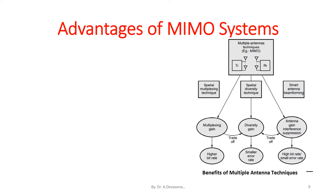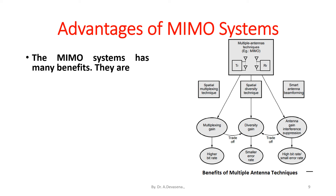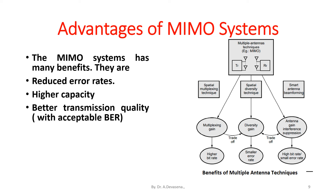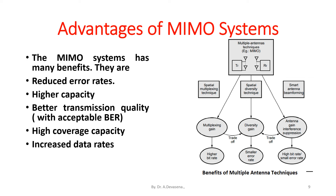Advantages of MIMO systems: the MIMO system has many benefits. They are reduced error rates, higher capacity, better transmission quality with acceptable BER, high coverage capacity, increased data rates, and better user position estimations.